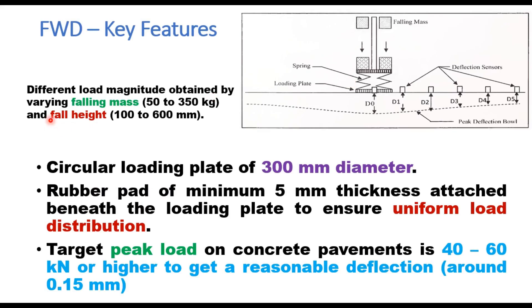Different load magnitude can be applied by varying the falling mass and falling height. The variation in the mass can be from 50 to 350 kg and this height can be changed by the user from 100 mm to 600 mm. There is a circular loading plate of 300 mm diameter and below this plate you have a rubber pad to distribute this transient load uniformly over the plate. The target peak load on concrete pavement is 40 to 60 kN or maybe even higher but the criteria is that you should have a reasonable deflection of around 0.15 mm in the last geophone.